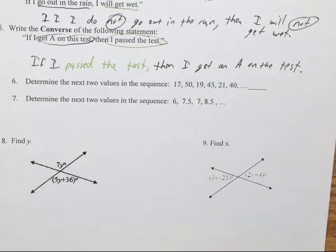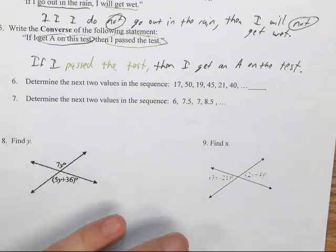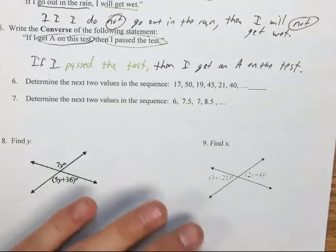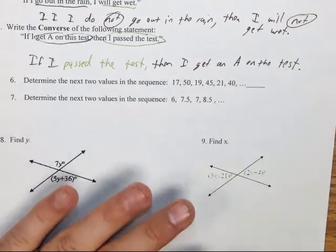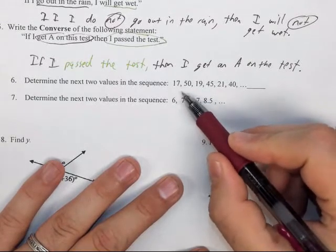Number six: determine the next two values in the sequence. This is using inductive reasoning skills. We're going to try to observe a pattern and then use that pattern to project out into the future or into our next things in the series. At first, this isn't one of those simple patterns where we're just adding the same thing every single time or multiplying by two every single time. It looks like your numbers go up and then back down and back up and down.